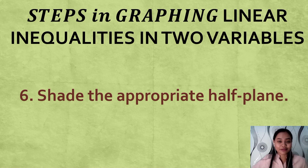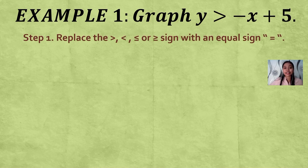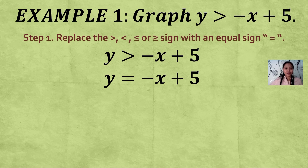Let's do an example: graph Y > −X + 5. Step 1: replace the inequality symbol with an equal sign. Since the symbol is greater than, we replace it to get Y = −X + 5.